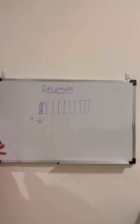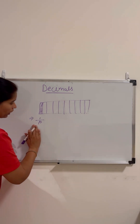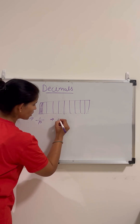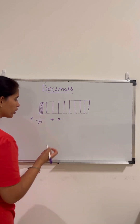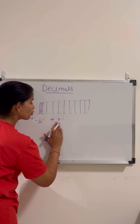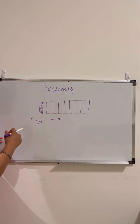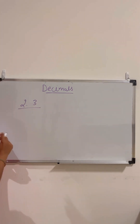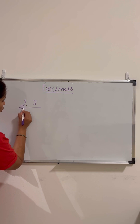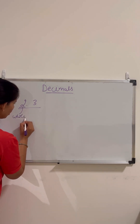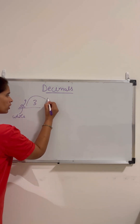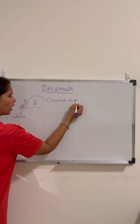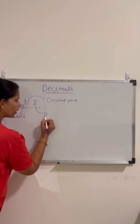We need to know how to convert a decimal fraction into a decimal. For example, one by ten becomes zero point one. If I have the number 2.3: the two here is called the whole number, this dot is called the decimal point — keep that in mind — and the part after the dot is called the decimal part.